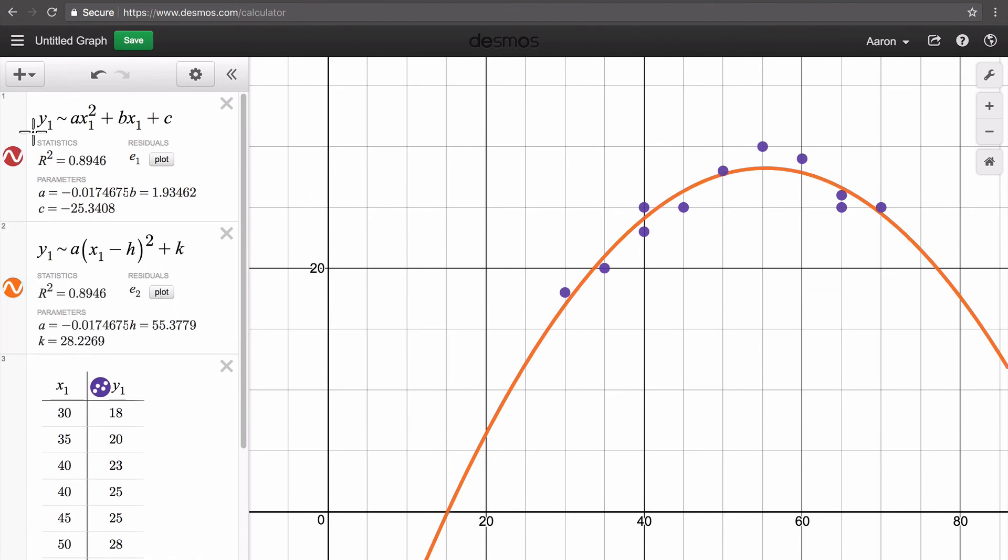Now, the way that this is different, this is the standard form equation, this is the vertex form equation, is that in vertex form, we're given a, h, and k, where h and k represent the x and y coordinates of our vertex. If we look here, we can see this is the x-coordinate of the vertex and the y-coordinate of the vertex.